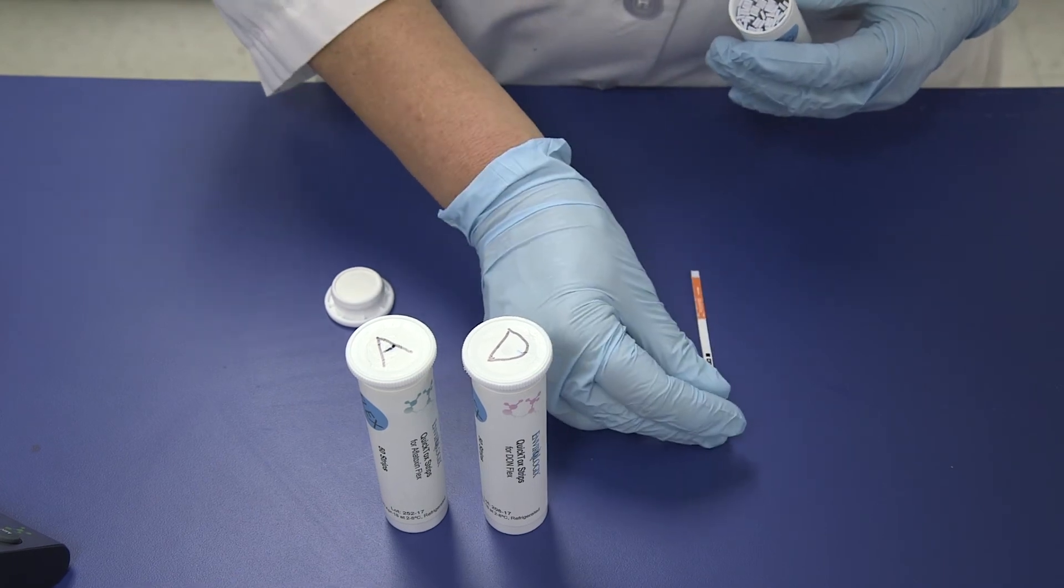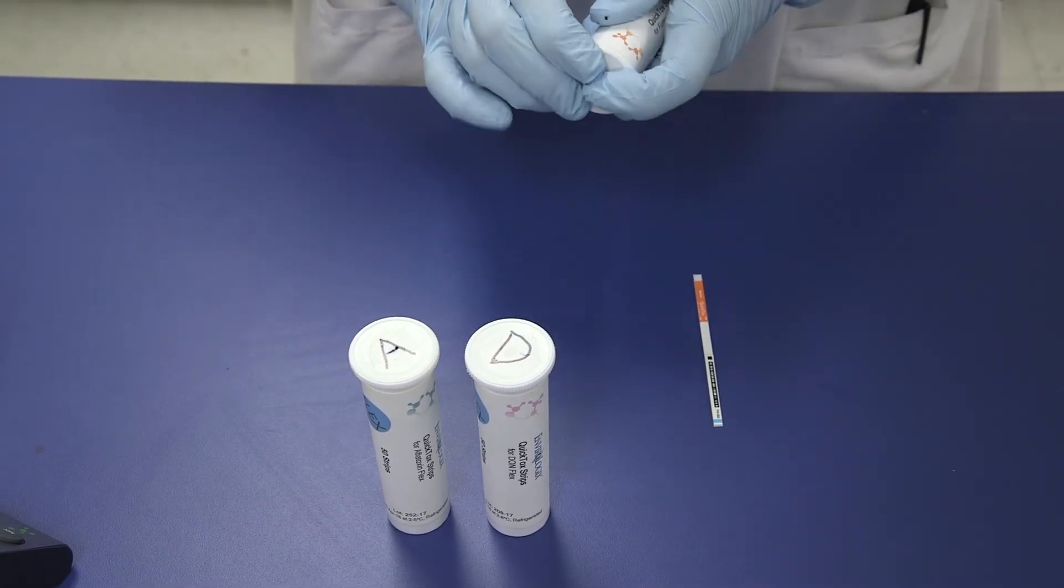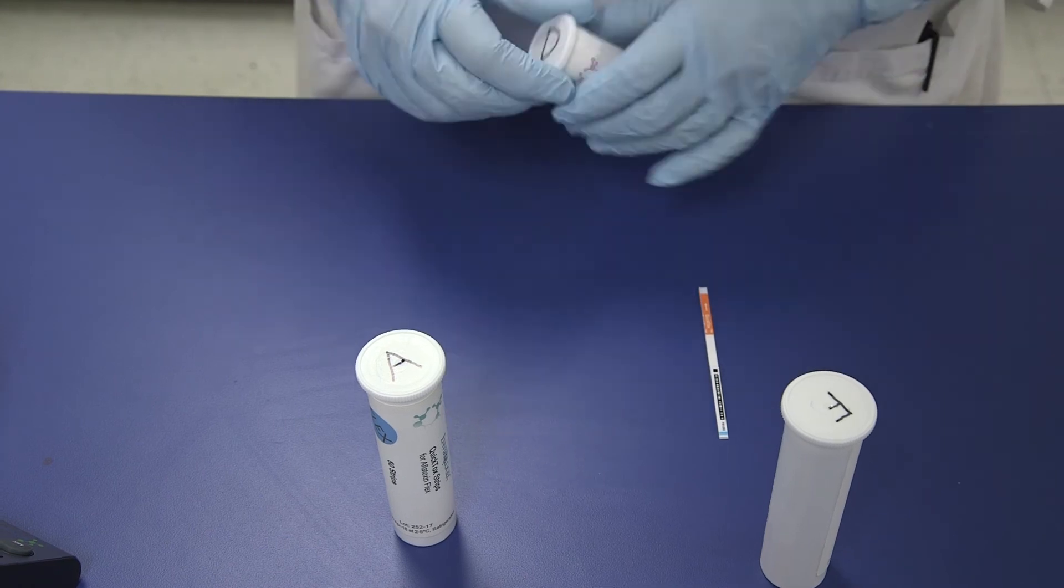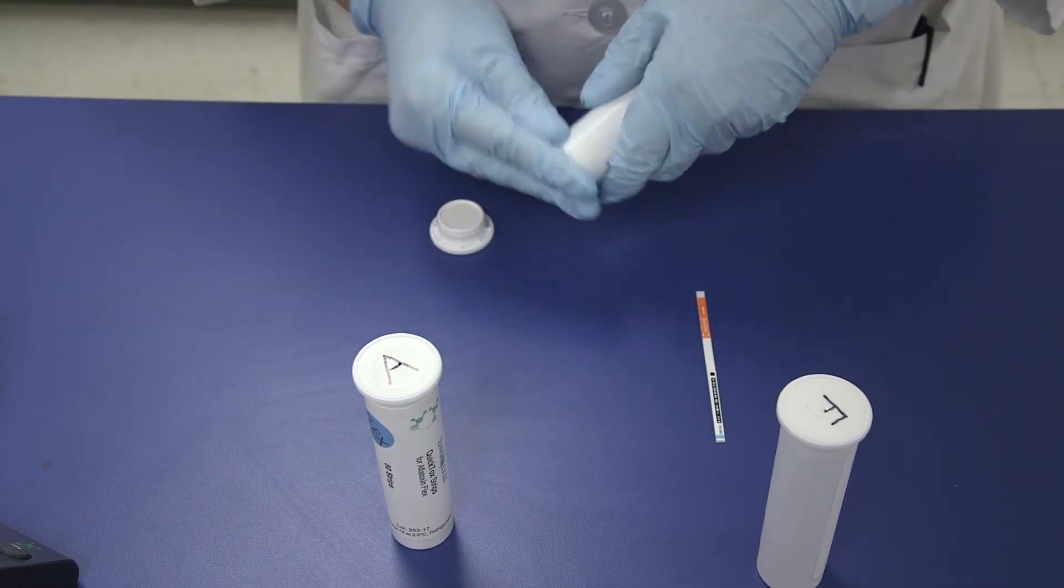You will need to remove the test strips from their canisters just prior to adding them to the reaction tubes. Immediately reseal the canisters after removing the strips.